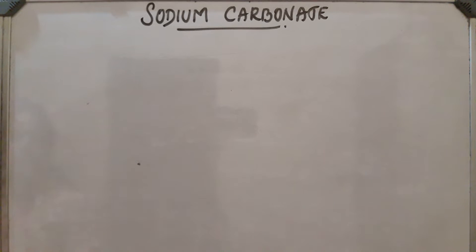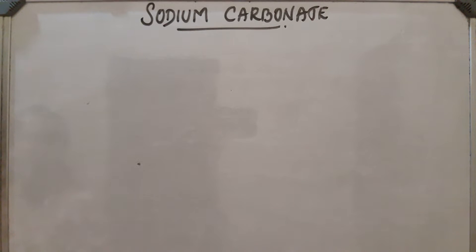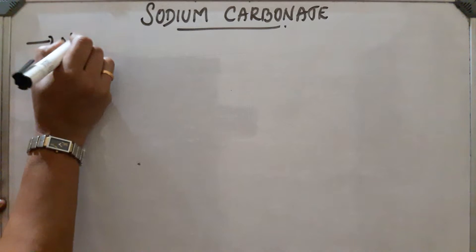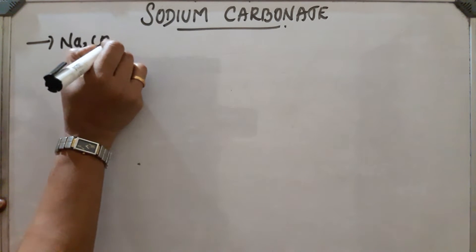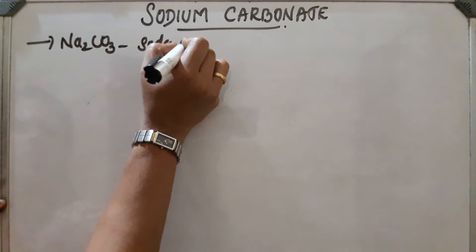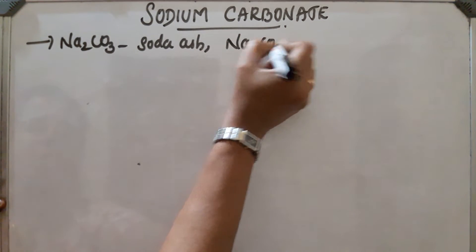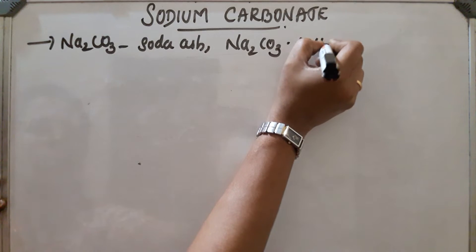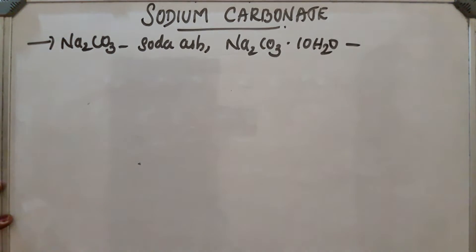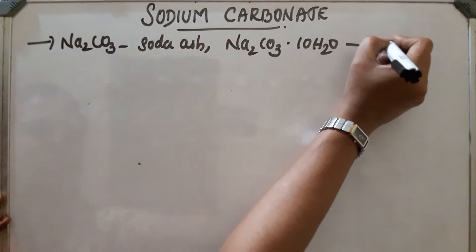Different compounds of sodium include sodium carbonate, sodium hydroxide, sodium chloride, and sodium bicarbonate. Sodium carbonate is Na2CO3. Anhydrous sodium carbonate is called soda ash, and Na2CO3·10H2O — sodium carbonate decahydrate — is known as washing soda.